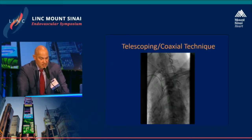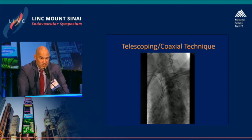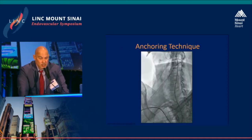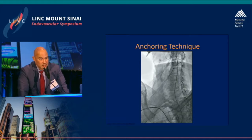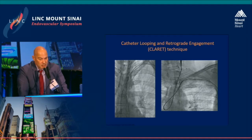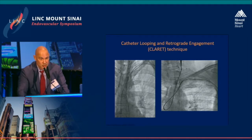The telescoping technique is simple: we advance a catheter and steerable wire into the external carotid, and then telescope or sheath the diagnostic catheter up to the distal common carotid. The anchoring technique is perhaps the simplest — we advance a steerable wire and diagnostic catheter into the external carotid, exchange the steerable wire for a stiff wire such as an Amplatz wire, and then advance a sheath. The catheter looping and retrograde engagement technique involves advancing a wire into the ascending thoracic aorta, into the aortic valve, where it loops and goes up, and then the catheter is advanced over it.